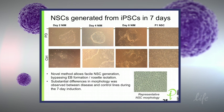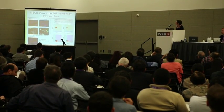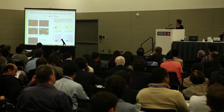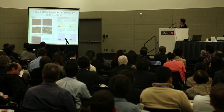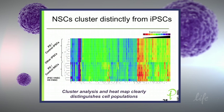Here you see the representative NSC morphology of the resulting cells, which look very much like EB-derived NSCs. We've done characterization of those neural stem cells and they show the expected markers using immunocytochemistry and flow — they are all Nestin-positive, SOX1-positive, and PAX6-positive, but we can't detect any OCT4 or NANOG in those cell cultures. Using the 609-gene expression panel, the NSCs cluster nicely together separately from all the iPSCs, confirming we have a distinct cell population.